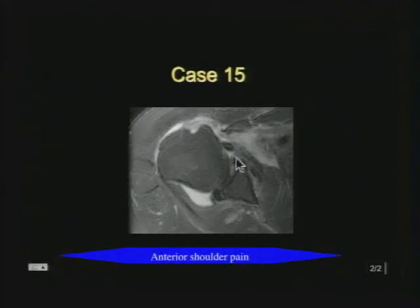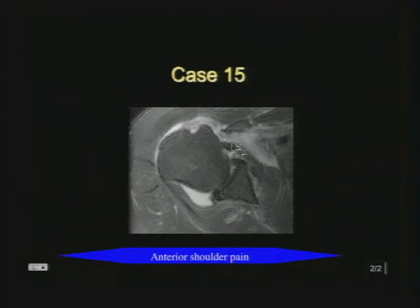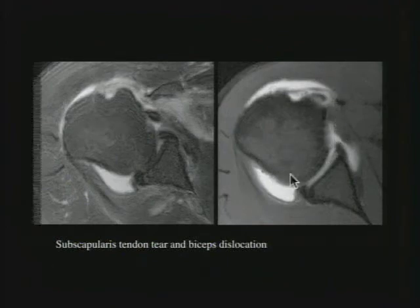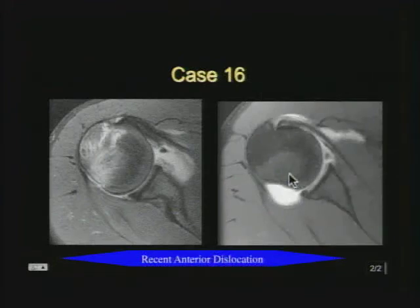In this case there's no biceps in the groove — it looks dislocated. Usually when the biceps dislocates, there's a subscapularis tendon tear, which could be partial or full thickness. What we see here is a retracted full-thickness subscapularis tendon tear. The biceps could also sublux with a partial tear of the subscapularis tendon.